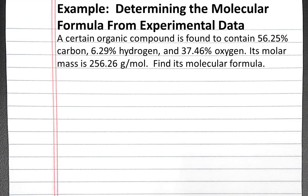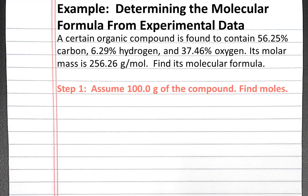The first thing we want to do to solve this problem is to determine the empirical formula of our compound. The empirical formula is the smallest whole number ratio of atoms of each element in the compound. The first step to calculating the empirical formula is to find the moles of each element in a certain sample of the compound. Because of the law of definite proportions, we can use any size sample of the compound that we want, and we should get the same answer for the smallest whole number ratio of atoms of each element.